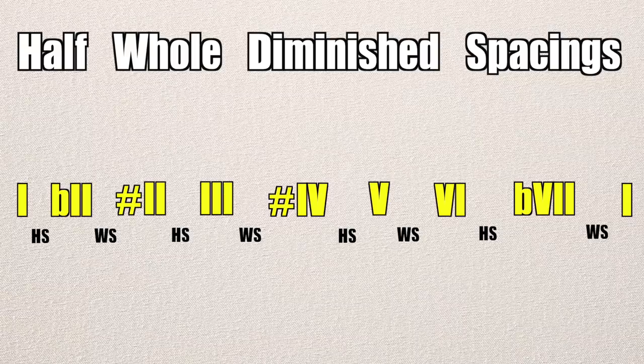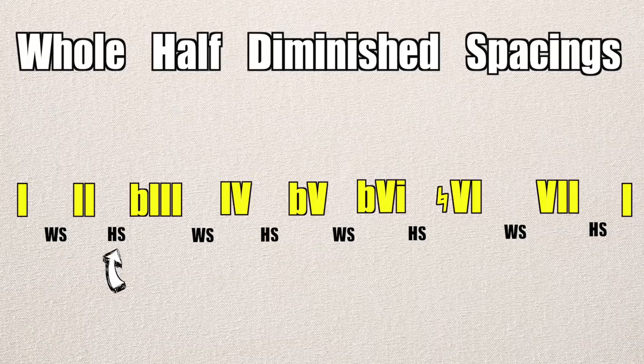Our next base scale is similar to the whole tone scale in the sense that it's a repetitive pattern: the diminished scale. The scale is a half step followed by a whole step, repeated until you reach the octave — it's called the half-whole diminished scale. Alternatively, you can do the same thing but start on the whole step followed by the half step, repeated to the octave — this is called the whole-half diminished scale. The diminished scale works nicely over diminished chords, or you can use the half-whole over dominant seven chords to create a unique flavor.